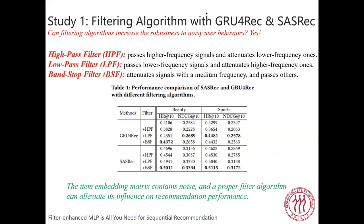We select three filtering algorithms: high-pass filter, low-pass filter, and band-stop filter. The high-pass and low-pass filters pass higher or lower frequency signals and attenuate lower or higher frequency ones respectively. The band-stop filter attenuates signals with medium frequency. As shown in this table, after combining with these filtering algorithms, the performance of both models increases in most settings. This indicates that item embedding matrices actually contain noise, and a proper filtering algorithm can reduce its influence on recommendation performance.